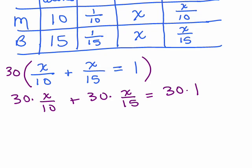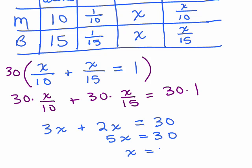So 10 goes into 3 three times. This gives us 3x. 15 goes into 30 twice, so that's a 2x, and 30 times 1, nothing cancels. That's just 30, because that did not have a fraction. Now we have a nice equation here. Add like terms. 5x is 30, and when you divide by 5, x will be 6.